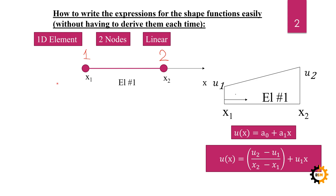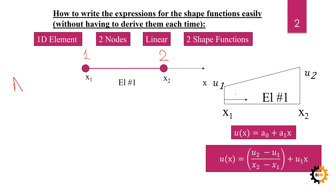We need to find the shape functions for these two nodes. Since there are two nodes, there will be two shape functions — the number of shape functions always equals the number of nodes. We call the shape function capital N, with a subscript indicating the node number, so N1 is the shape function for node one. The shape function is always written in the form of a fraction.